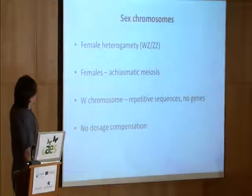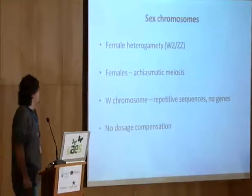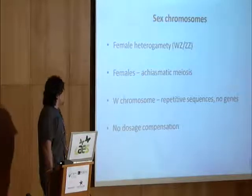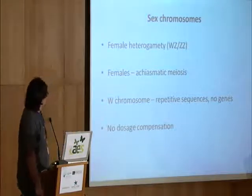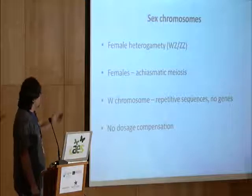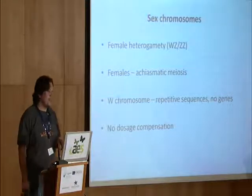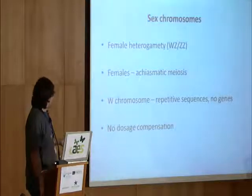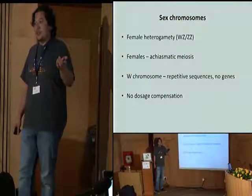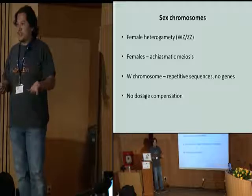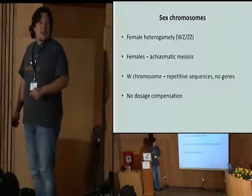What about sex chromosomes? Lepidoptera — moths and butterflies — are the largest group of animals with female heterogamety, which means that females have a female-specific W chromosome and males have two Z chromosomes. Another important and quite unique feature is that females have achiasmatic meiosis, meaning there is no recombination during female meiosis. The female-specific W chromosome is full of repetitive sequences and probably has no coding sequences. There is also no dosage compensation between males and females.